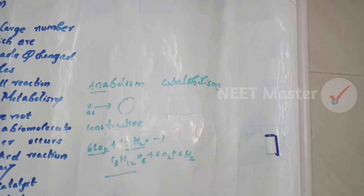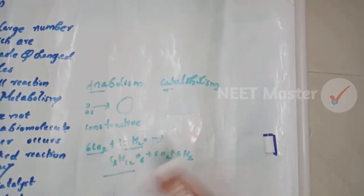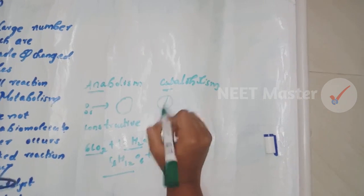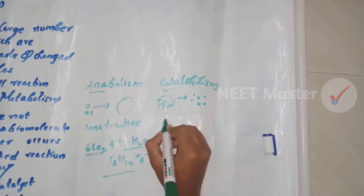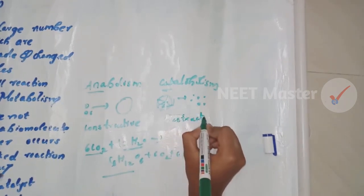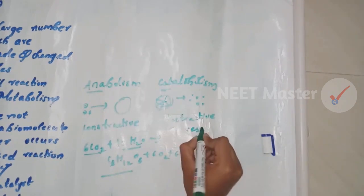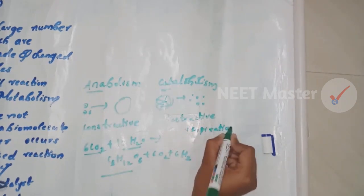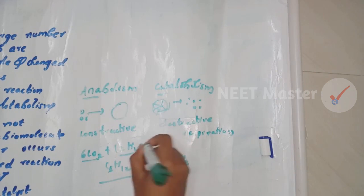Catabolism is a destructive breakdown process. An example of catabolism is the use of glucose in respiration. In respiration, glucose is broken down — this is a catabolic pathway.